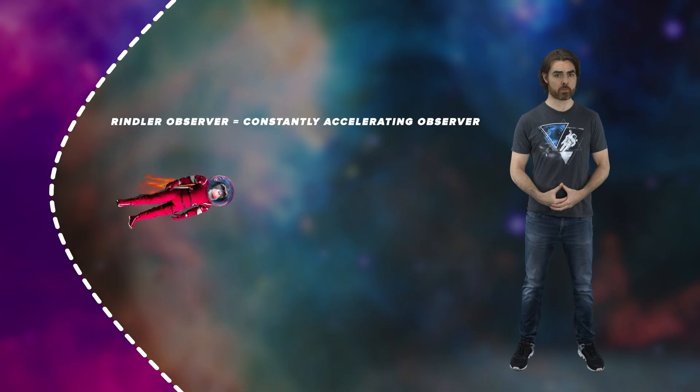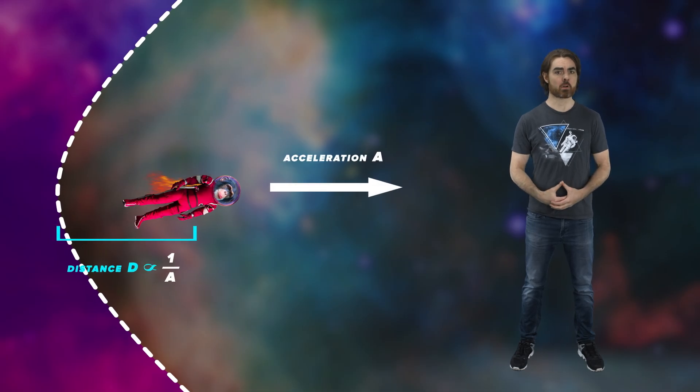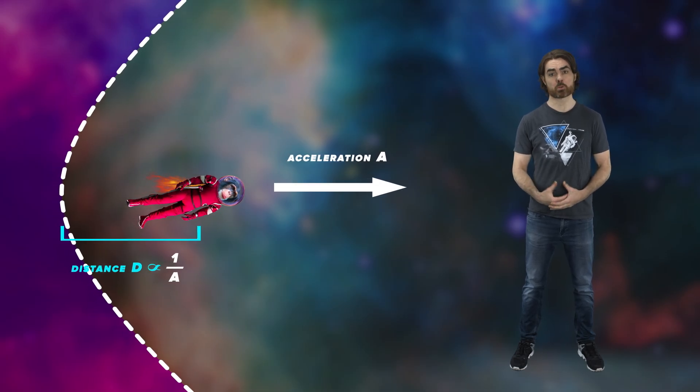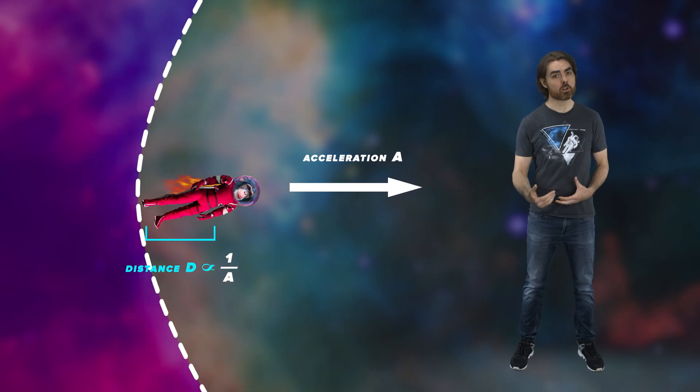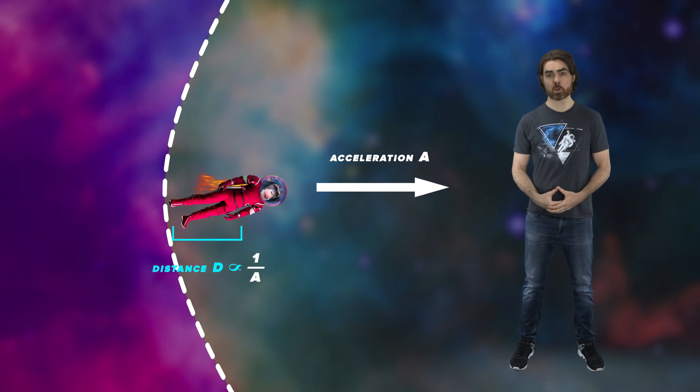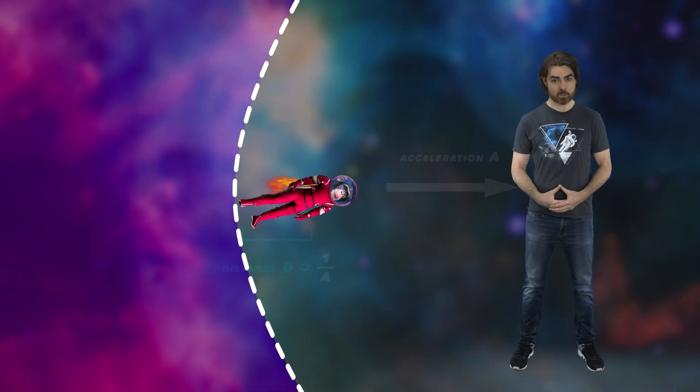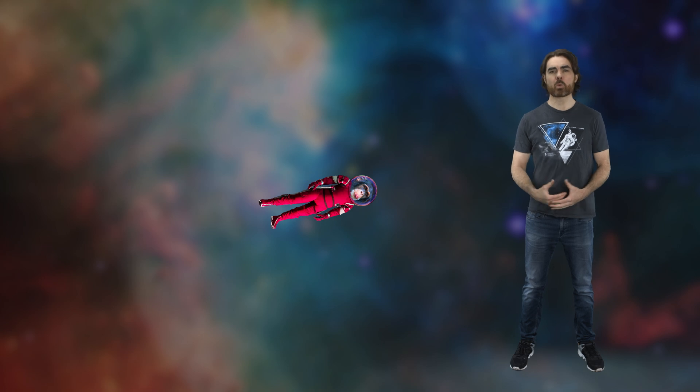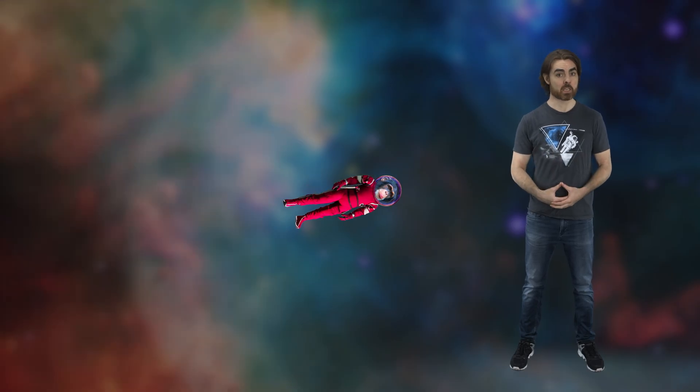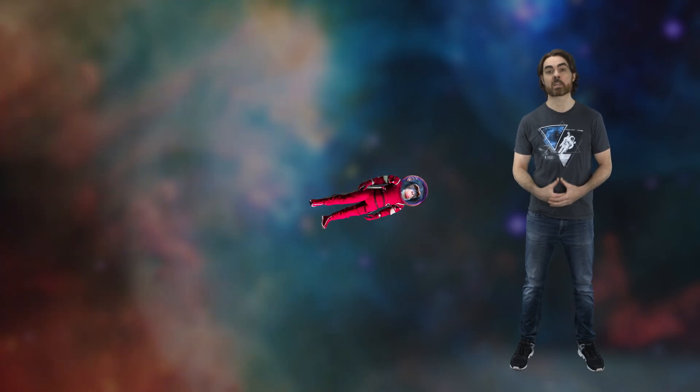The Rindler horizon flows at a fixed distance behind a constantly accelerating observer. Let's call them Rindler observers from now on. The distance of a Rindler horizon is inversely proportional to acceleration. The larger the acceleration, the closer the horizon. All parts of the universe beyond that horizon are out of causal connection with the Rindler observer as long as they continue to accelerate. But here's the weird thing. Even momentary acceleration generates a Rindler horizon. You don't need to pinky swear that you'll keep accelerating. It's like the projected future acceleration gives you a Rindler horizon in the present.